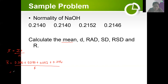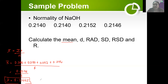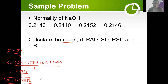So 0.2140 plus 0.2140 plus 0.2142 plus 0.2146 equals 0.8578, divided by 4. The mean is 0.2145. In an exam or quiz, just follow the instruction on how many decimal places to round off the final answer. For this case, let's use 0.21445 as our mean for the set of data.